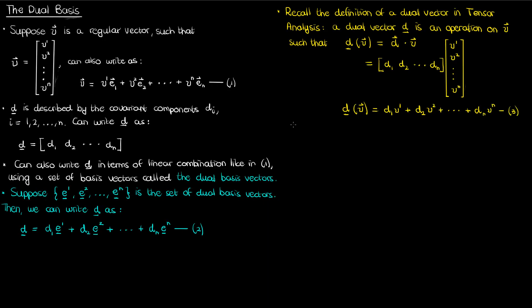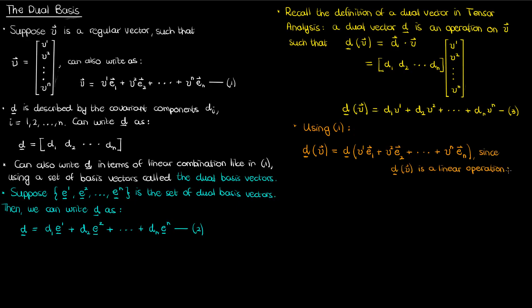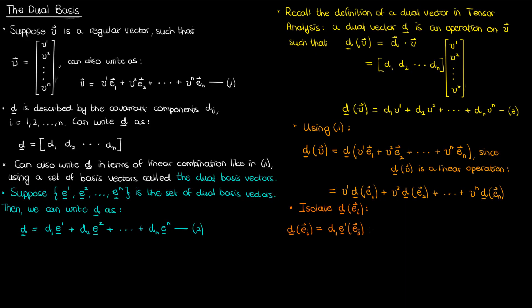Now let's use the fact that the dual vector represents a linear operation to evaluate d of v with a separate calculation. Instead of using v directly, I'm going to use equation 1 to write v in terms of its linear combination involving basis vectors. Because the dual vector operation is linear, I can break up this expression into the linear combination of dual vector operations on each of the regular basis vectors. Let's isolate the dual vector operating on some basis vector e sub i. Using equation 2, we can break up this operation: we'll have d sub 1 times e super 1 of e sub i, plus d sub 2 times e super 2 of e sub i, all the way to d sub n times e super n of e sub i.